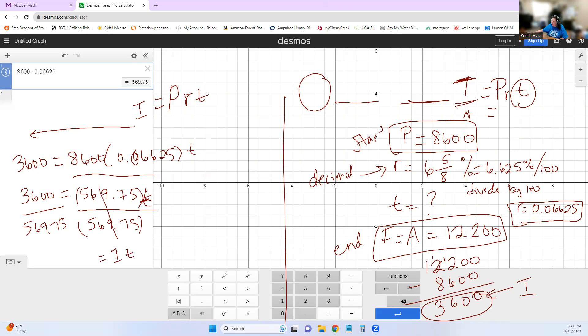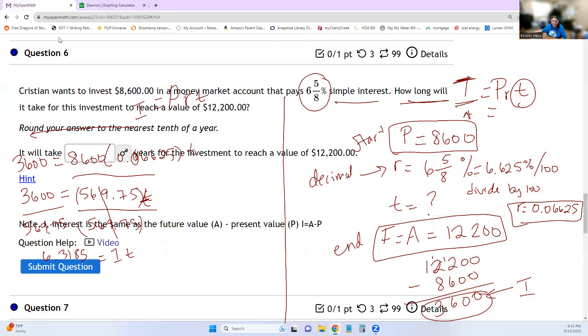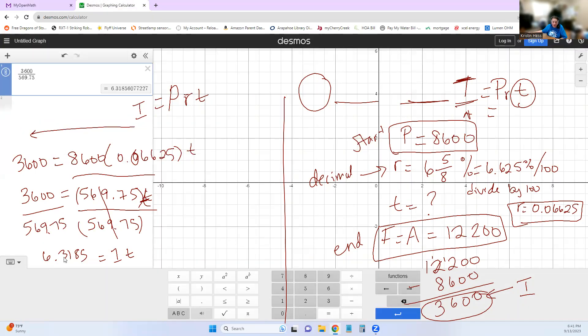So come back over to Desmos, and we're going to put in 3,600 divided by 569.75. And once we do that, then we get 6.3185. And now let's go back to the original problem. Little messy here, but it says round your answer to the nearest 10th of year. That means one decimal. So our answer here is 6.3185. One decimal is just a 10th is one decimal. So it's going to be 6.3.